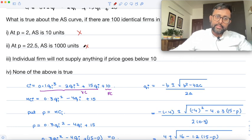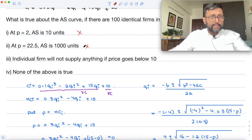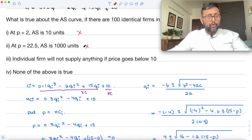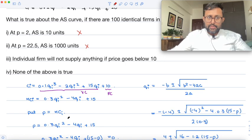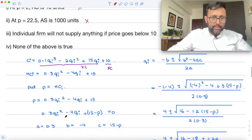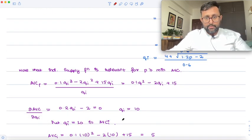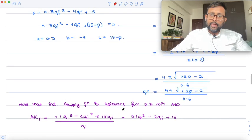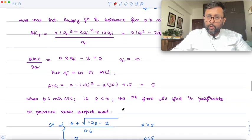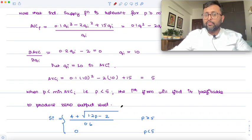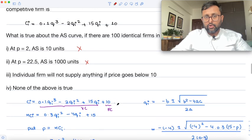Individual firm will not supply anything if the price goes below 10. But Qi is equal to 10, not the price is equal to 10. So if the price is going to go below 5, individual firm is not going to produce anything. So just try to see how the examiners can confuse you. You have found out Qi equals 10. So don't be confused. I mean, don't just mark this. When price goes below 5, individual firm will not produce anything. So even this is wrong.